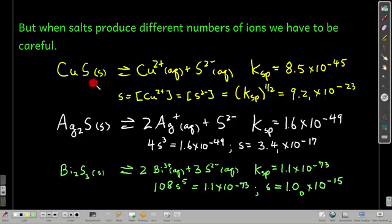So copper 2 sulfide breaks apart into two ions, and so the solubility once more will be the square root of the KSP, which ends up being 9.2 times 10 to the minus 23rd. That's how many moles per liter of copper 2 sulfide will dissolve in a liter of aqueous solution, not very much.